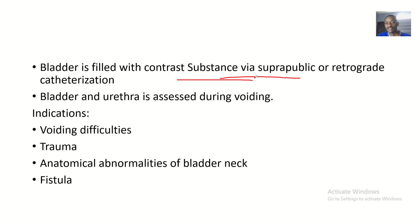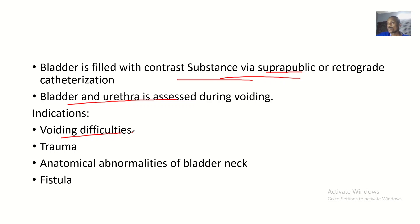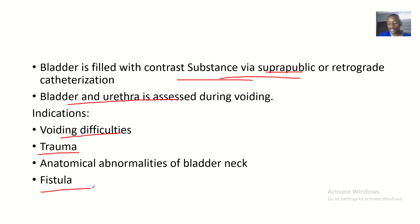This contrast substance will be applied via the suprapubic area or retrograde catheterization. The bladder and ureter is accessed during voiding. This will indicate if you have voiding difficulties or difficulty in urination, help the radiologist point it out. It will indicate for trauma — if you have any traumas in the bladder. If there are any anatomical abnormalities of the bladder neck, maybe the bladder neck is thin or constricted, it will help the doctor point it out. And if you have any fistula of the bladder or the urethra, it helps the clinician identify that.